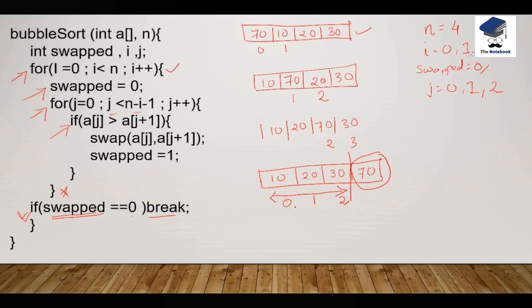So at the end of the algorithm, we will get the sorted array as 10, 20, 30, and 70.